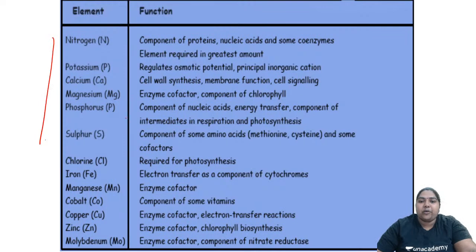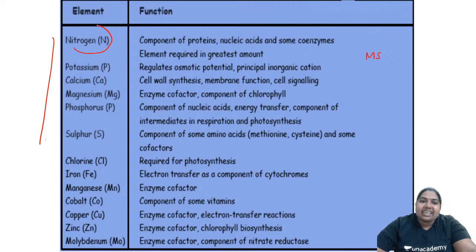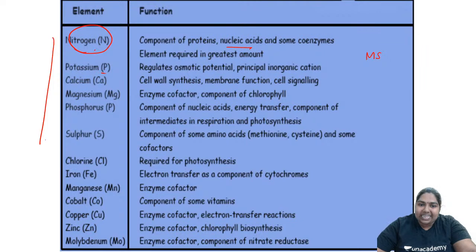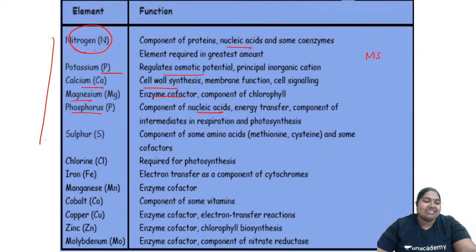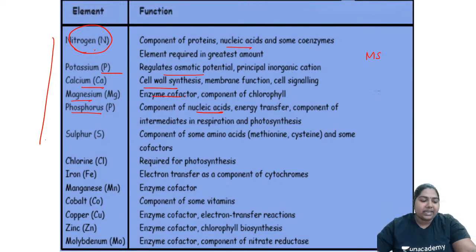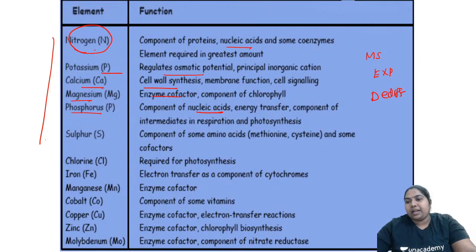Each component of MS media has a specific function: nitrogen makes up nucleic acids; potassium regulates osmotic potential; calcium is required for the cell wall; magnesium acts as a cofactor; phosphorus is involved in making nucleic acids. All components are equally important.